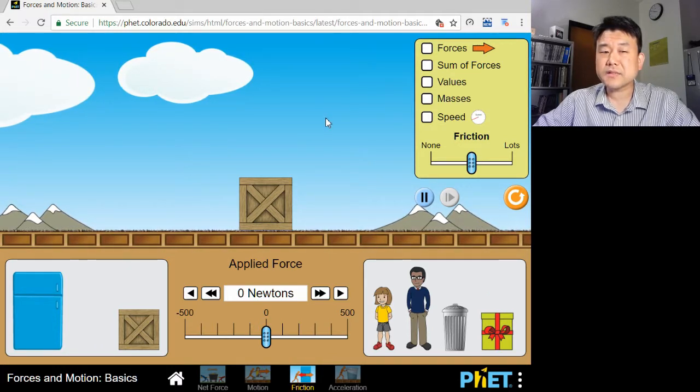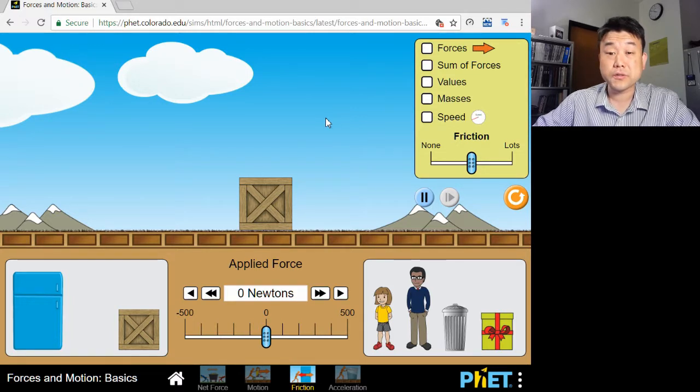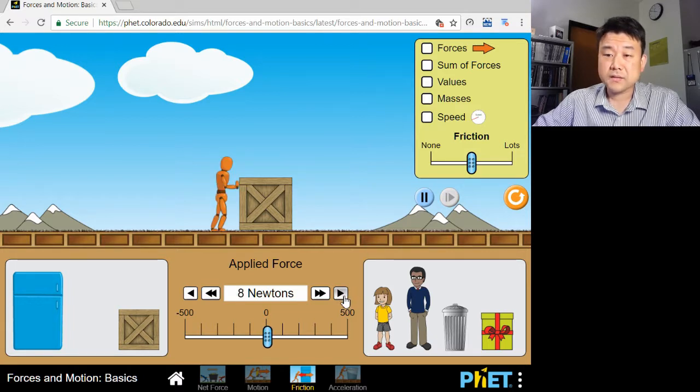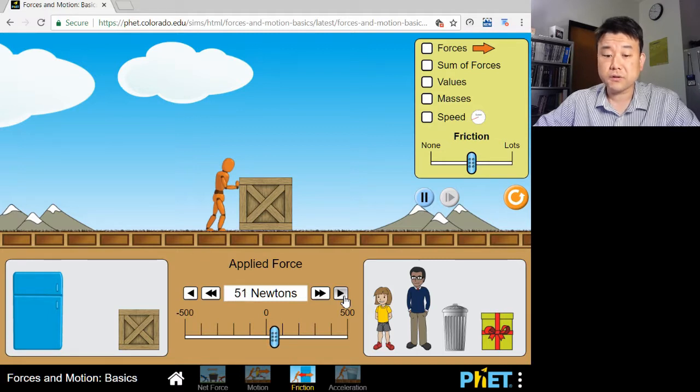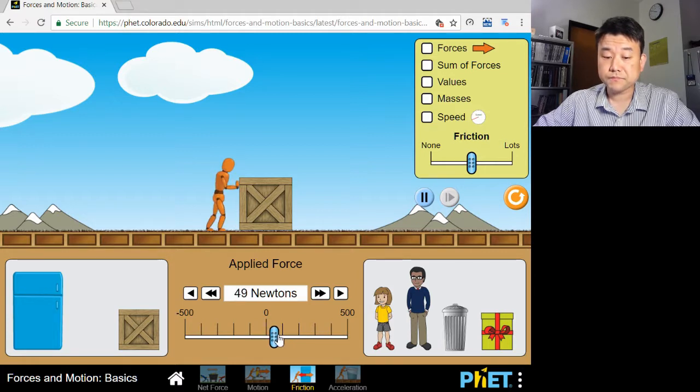And this is completely counter to what Newton's second law says, that net force is equal to mass times acceleration. At least it is counter if you only think of your applied force. As you apply a force, acceleration is obviously not increasing with the force. With zero force, you get zero acceleration. With some force, you still get zero acceleration.